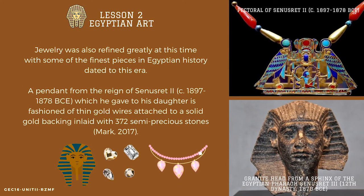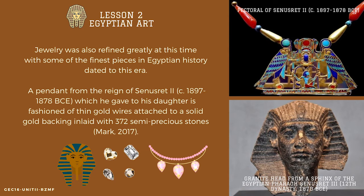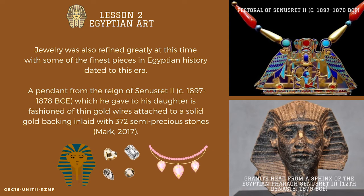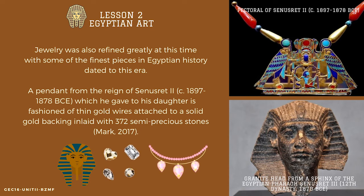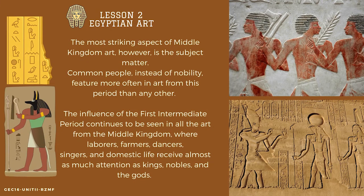The paintings, frescoes, and statuary which accompanied the tomb reflect a high level of sophistication and symmetry. Jewelry was also refined greatly at this time, with some of the finest pieces in Egyptian history dated to this era. A pendant from the reign of Senwosret II, circa 1897–1878 B.C.E., was fashioned of thin gold wires attached to a solid gold backing inlaid with 372 semi-precious stones. The most striking aspect of Middle Kingdom art, however, is the subject matter — common people, instead of nobility, feature more often in art from this period than any other.